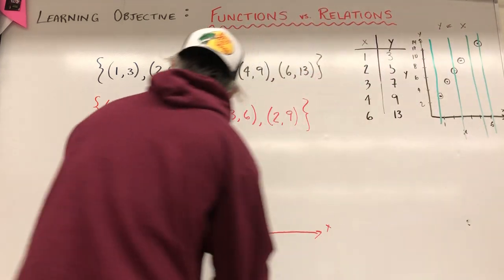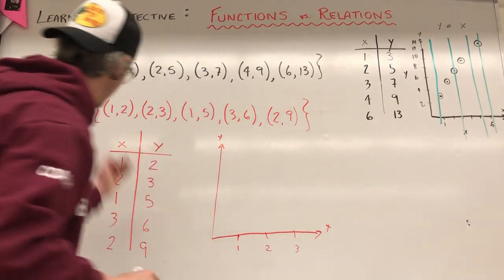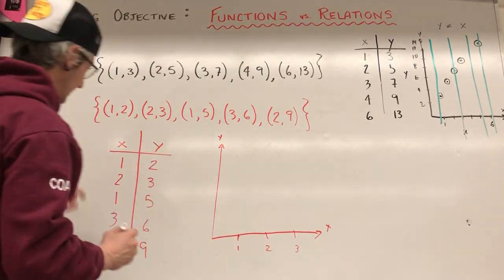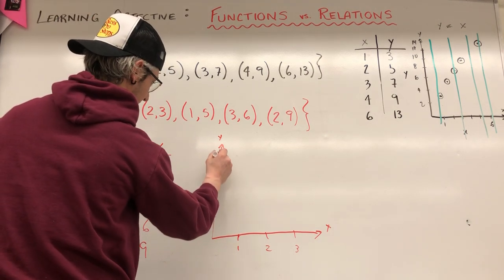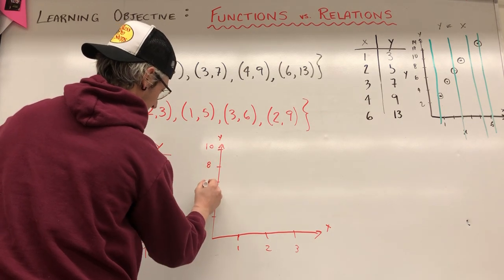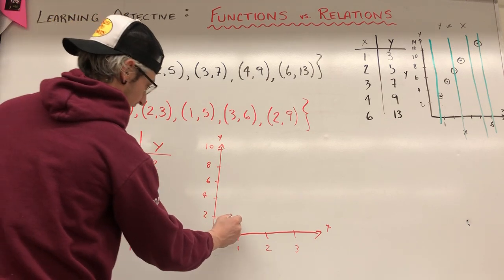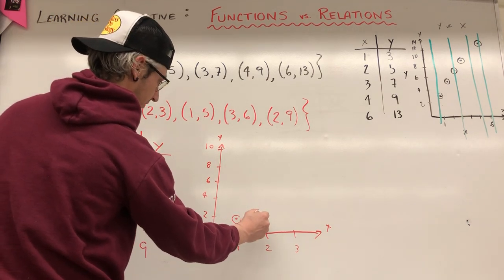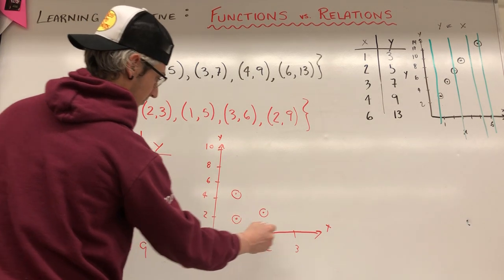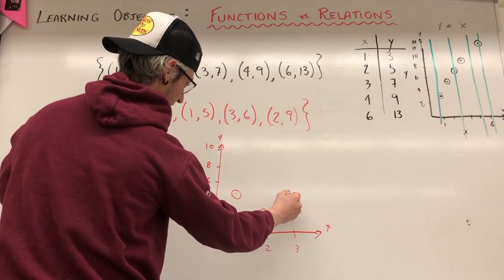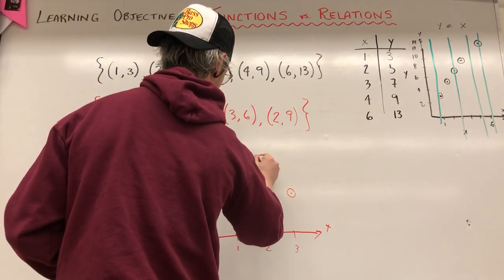So what would that look like if we were to graph it? I'm going to have 1, 2, 3 on my X axis. My X axis is my horizontal axis. And at 1, so I'm going to have up to 9. So 2, 4, 6, 8, 10. I should do it. 8, 4, 2, this is zero. So at 1, I'm at 2. At 2, I'm at 3. At 1, I'm at 5. At 3, I'm at 6. And at 2, I'm at 9.